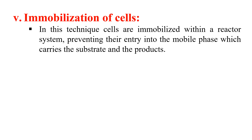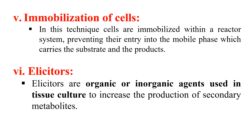The next method is immobilization of cells. By immobilizing cells, we can also increase the amount of secondary metabolites. In this technique, we immobilize or fix our cells within the reactor — the cells are not allowed to move and are fixed at a particular position. When the media flows over them in the reactor, they produce secondary metabolites, which also increases production. Next are elicitors — these are certain organic or inorganic compounds which, when used, increase the production of secondary metabolites or increase the growth of the culture or organs.